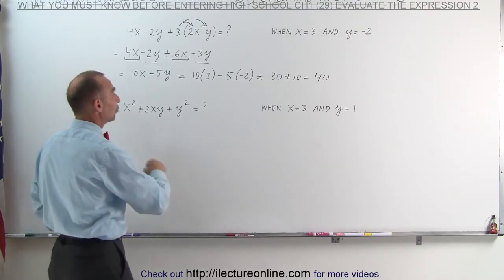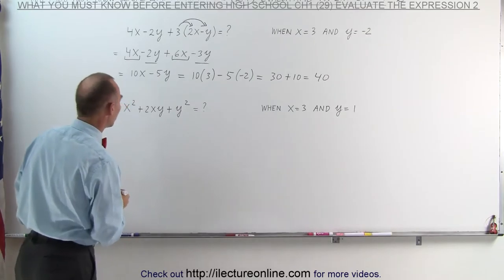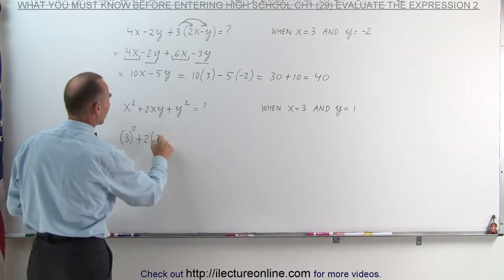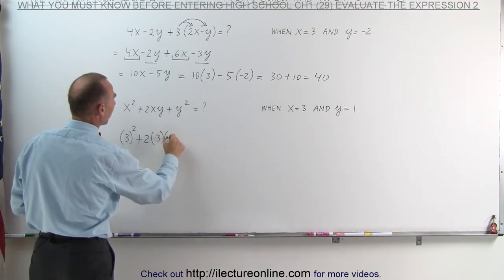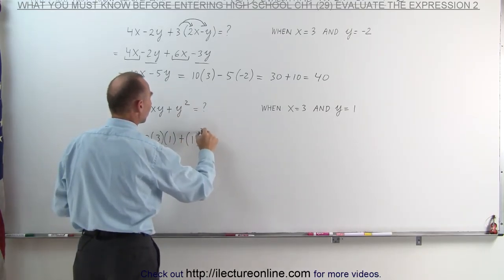So let's go ahead now and substitute. For x we're going to write a 3, for every y we're going to write the number 1. Here we have x squared, this becomes the number 3 squared plus 2 times x which is 3 and y which is 1 plus y squared, y is the number 1 becomes 1 squared.